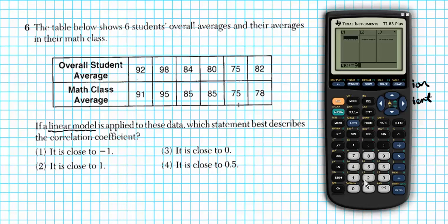92 enter, 98 enter, 84 enter, 80 enter, 75 enter, 82 enter. Any time you enter information into a calculator, you always want to double check to make sure everything is correct. 92, 98, 84, 80, 75, and 82, perfect. So our first list is the overall student average.